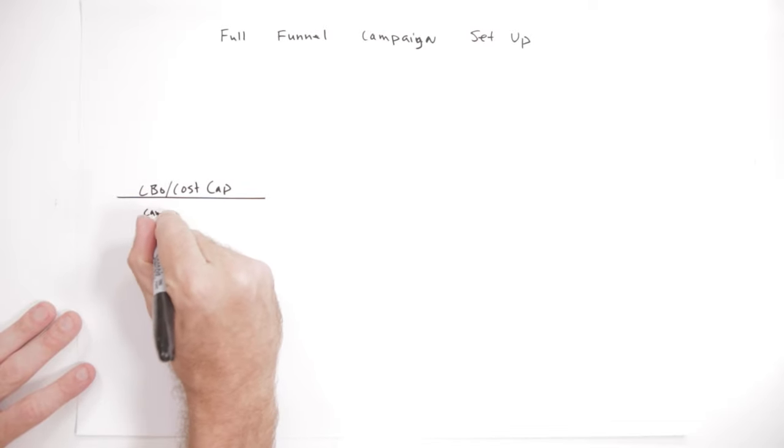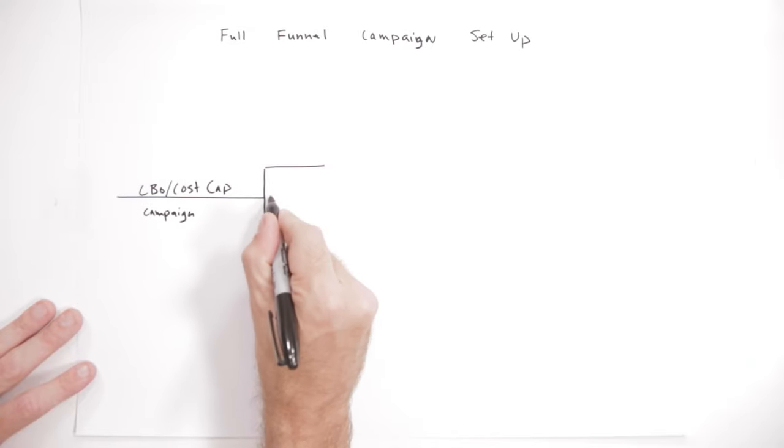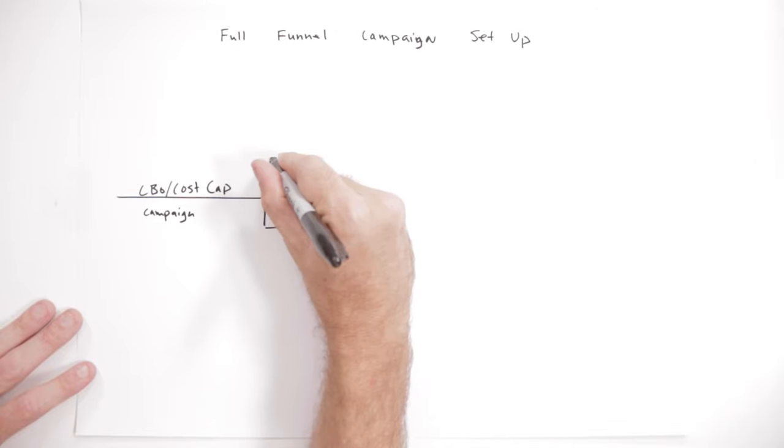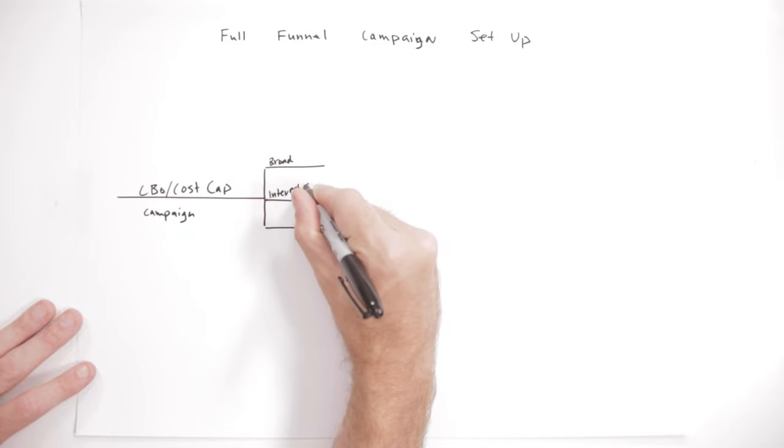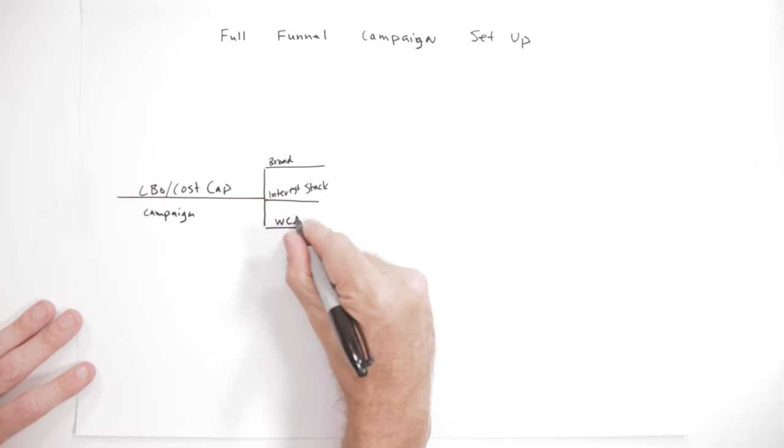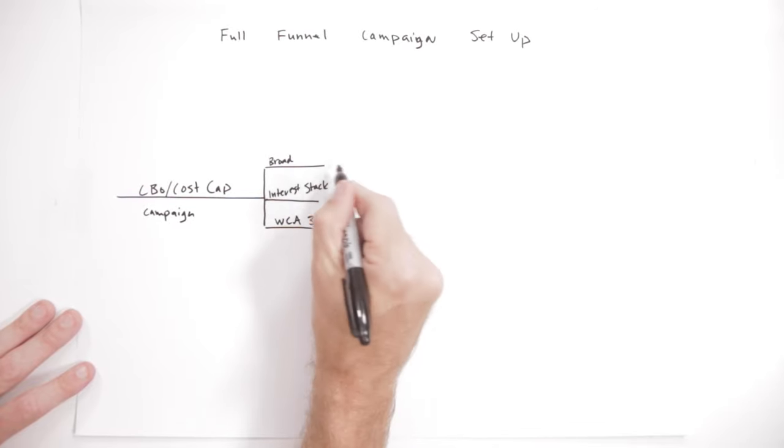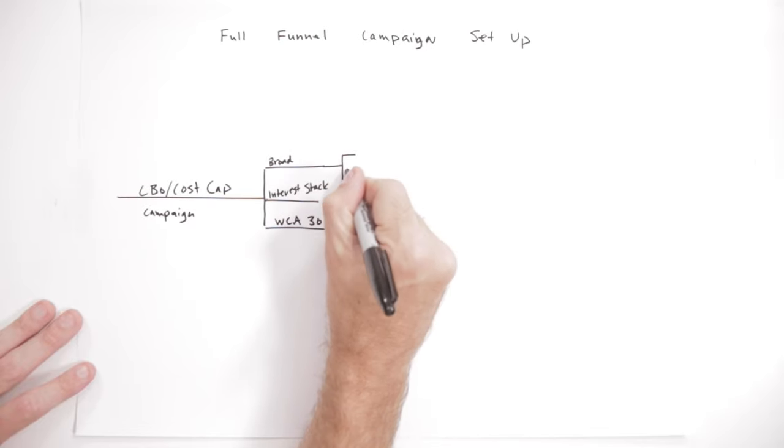This is our campaign. Inside of these campaigns we'll usually have three or four ad sets. We'll look something like this, call this broad, call this an interest stack. And then this will be remarketing inside of the CBO. And then inside of each of it we'll have somewhere between three to five ads depending on the budget.